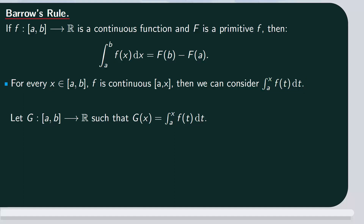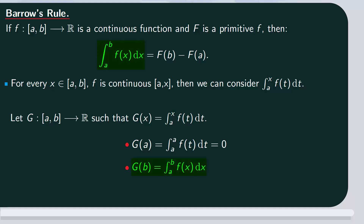Notice that if we calculate, for example, g(a), we substitute a for x in the expression of g. This will be the integral between a and a of f(t) dt, which is zero. And if we calculate g(b), we substitute x for b. Since x no longer appears, we can use the variable x instead of t. This will be the integral between a and b of f(x) dx. So, g(b) is the integral we want to evaluate. Later, we'll come back to this.